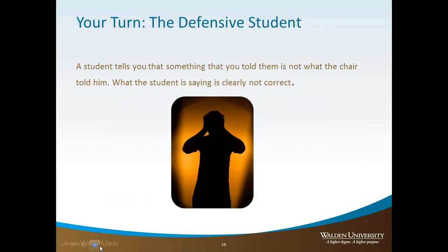At this point we have two or three scenarios — it's an opportunity for you to use the chat bar or raise your hand about situations that might come up and ideas for how to deal with them. All three scenarios do come up at capstone intensives. The first one is what we call the defensive student: a student tells you that something you told them is not what the chair said, but you know that what the student is saying is clearly incorrect. What would you do? Let's give everyone another minute to think before we start the discussion.